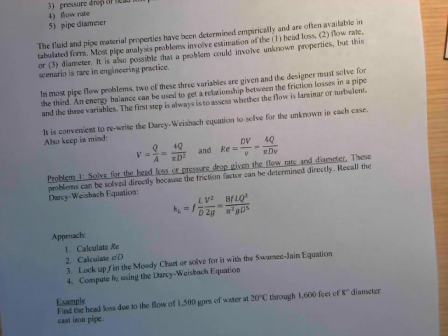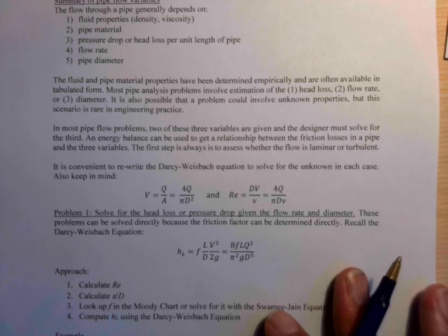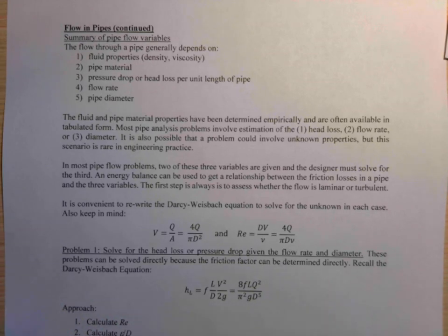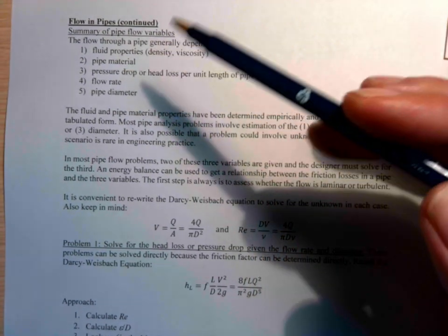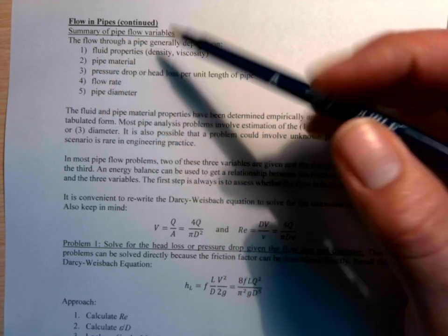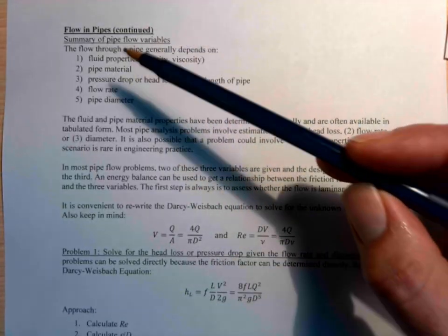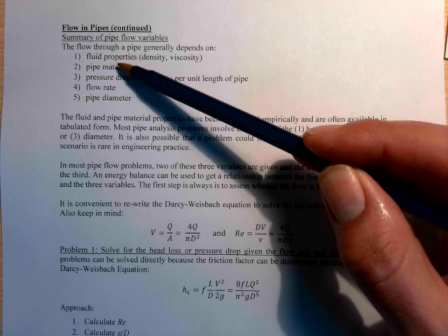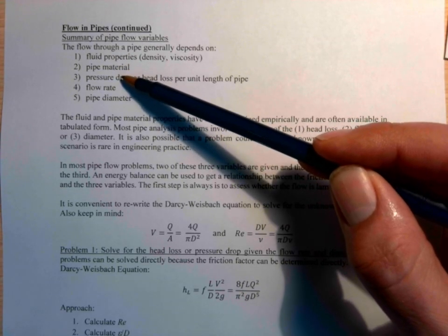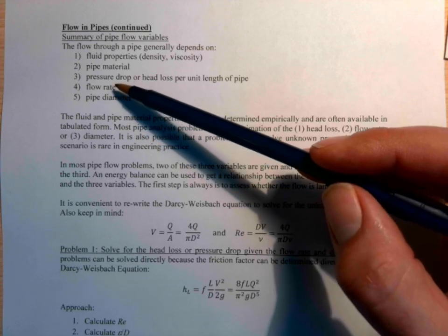In doing pipe flow problems in turbulent flow, it's tricky because we have to know the Reynolds number and the relative roughness in order to get the friction factor. There's really five variables that we could solve for. The first one is the properties of a fluid given the other four. So there's five variables: fluid properties, the pipe properties, the pressure, the flow rate, and the diameter.